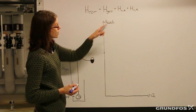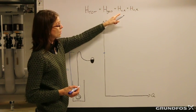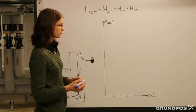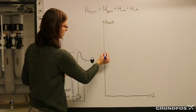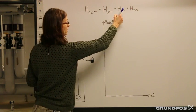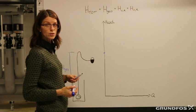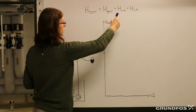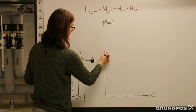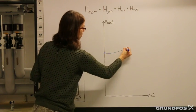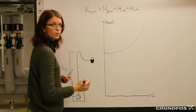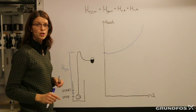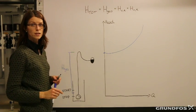Now we'll look into the dynamic friction loss in the linear pipe. That, together with the friction loss head required in the valves and fittings, will give the slope of the system curve — that's the dynamic friction loss in the system.